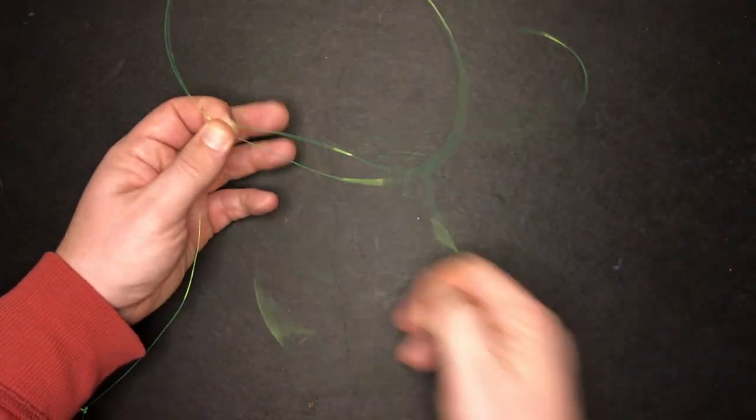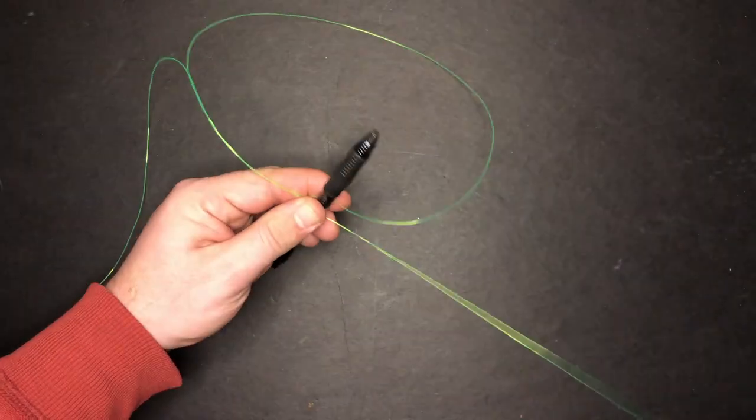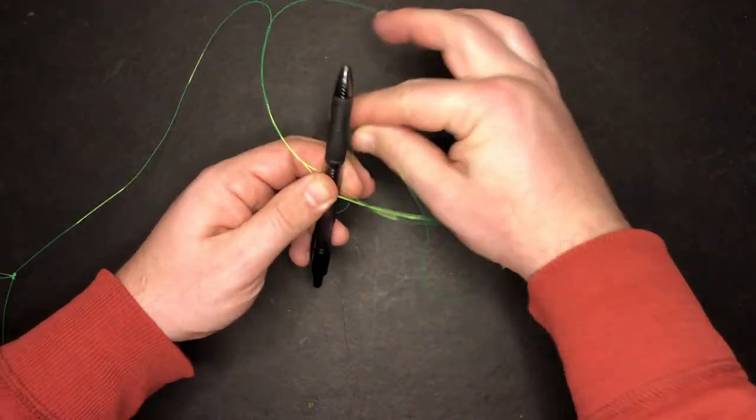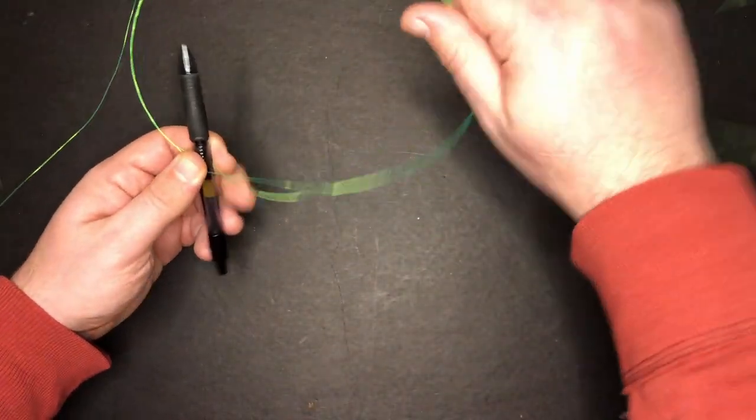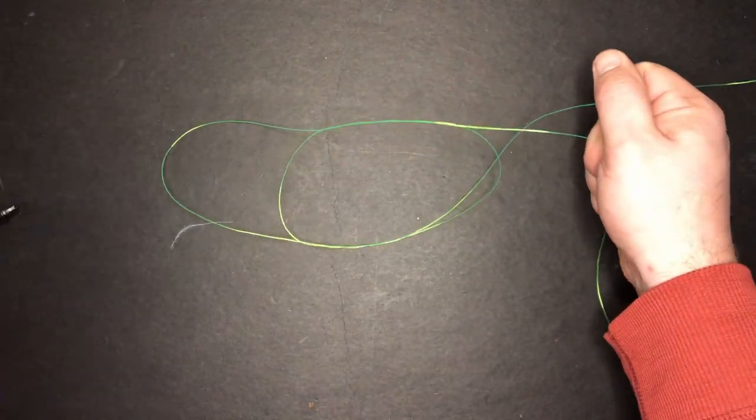The first is whenever you're using a really strong test line, you don't need to thread the tag end through that giant loop more than three times on either side of the pin. If you're using weaker test line, sure, you can add one or two more threads on either side of the pin. But whenever you're using a really strong test line like this, in my opinion, anything more than three just isn't necessary.